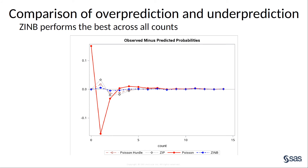Here is a visualization of the four models you fit, comparing the difference between the observed counts and the predicted counts. The ZINB is the best model across all the levels.